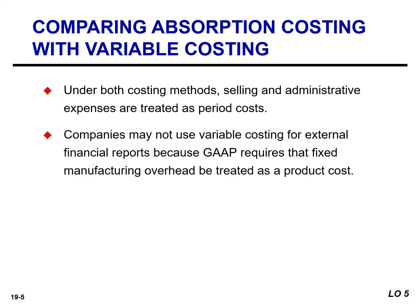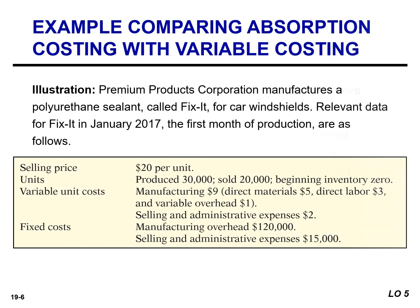Companies may not use variable costing for external financial reporting purposes because GAAP requires that fixed manufacturing overhead be accounted for as a product cost. To illustrate absorption and variable costing, we're going to use Premium Products Corporation, which manufactures a polyurethane sealant called Fix-It. Relevant data for Fix-It for January 2017, the first month of production, is provided on this slide.